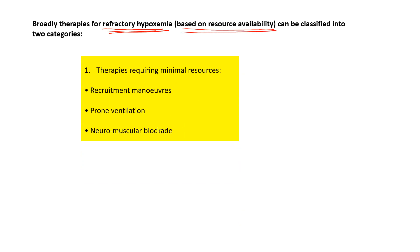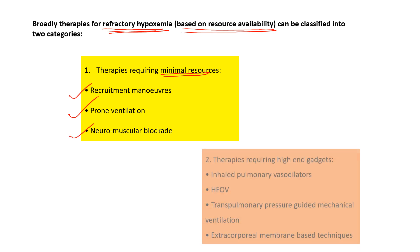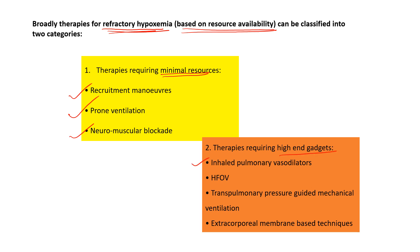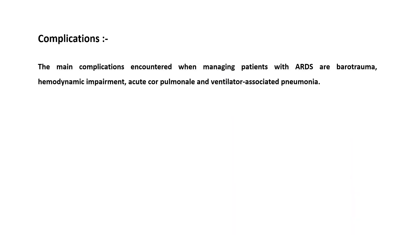For refractory hypoxemia management based on resource availability: with minimum resources, use recruitment maneuvers, prone positioning, and neuromuscular blockade. With more resources, inhaled pulmonary vasodilator therapy is available. High-frequency oscillatory ventilation is no longer recommended following the OSCAR trial and OSCILLATE trial — one was stopped due to increased mortality and the other had a negative outcome. Advanced options include transpulmonary pressure-guided mechanical ventilation using esophageal pressure monitoring, and extracorporeal membrane-based techniques.